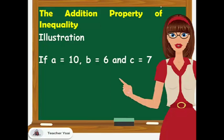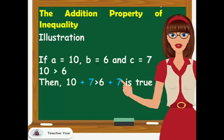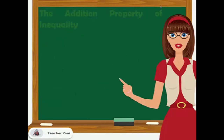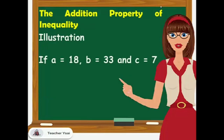For example, if A equals 10, B equals 6, and C equals 7, we have 10 is greater than 6. Then the statement 10 plus 7 is greater than 6 plus 7 is true, since 10 plus 7 is 17 and 6 plus 7 is 13.